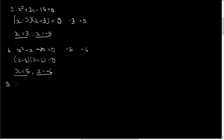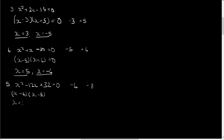Example five: x squared minus twelve x plus thirty-two equals zero. We want the factors of thirty-two that add together to give minus twelve. We'll settle on minus four and minus eight, because four times eight is thirty-two, both negatives give the positive product, and they add together to give minus twelve. So the solutions are x equals four or x equals eight — two solutions.